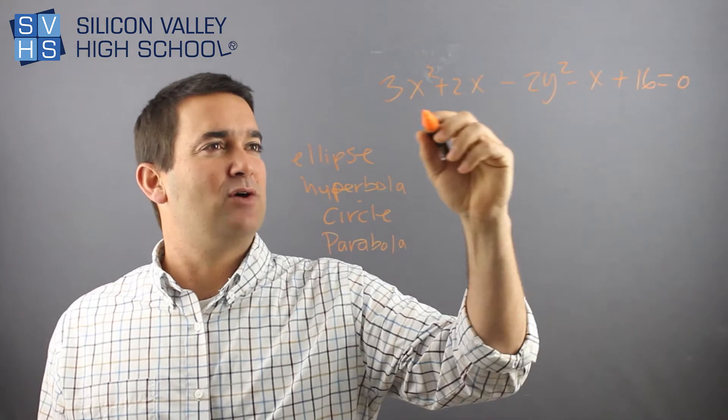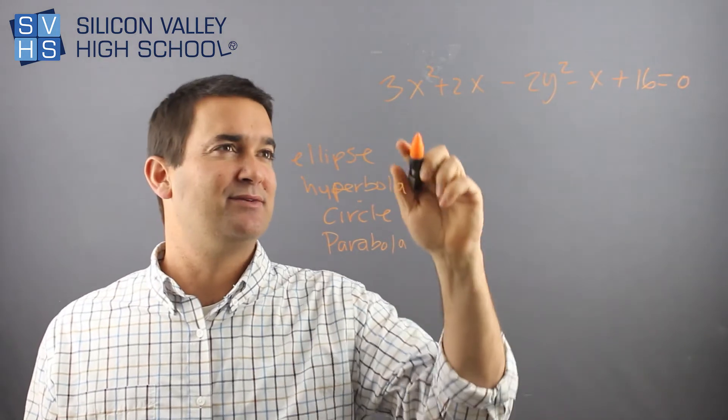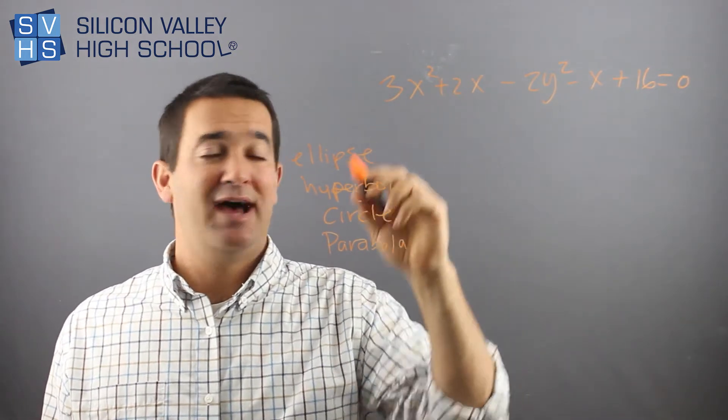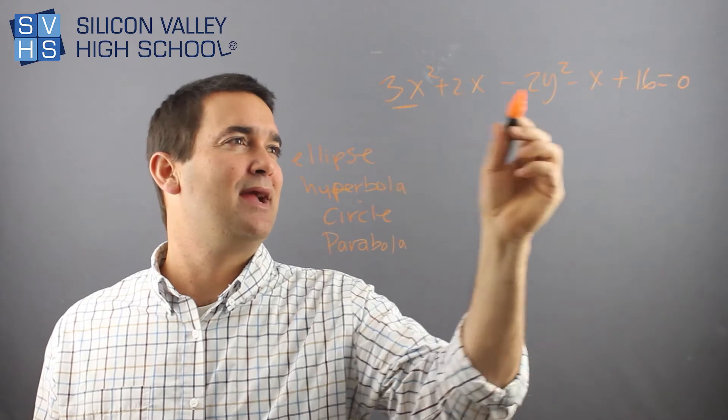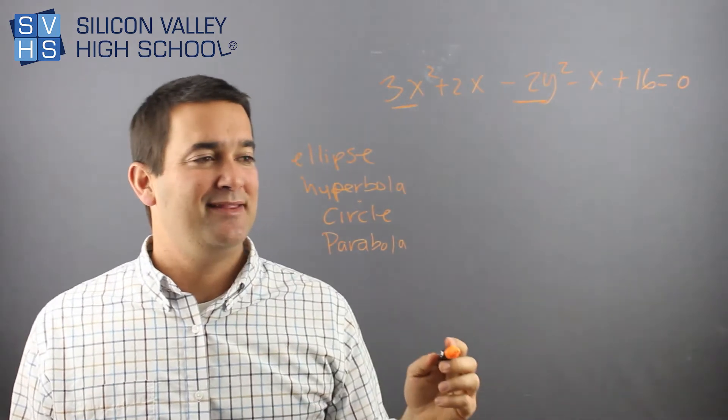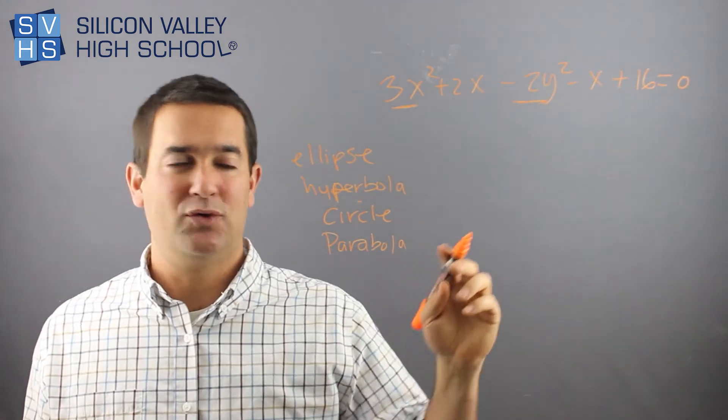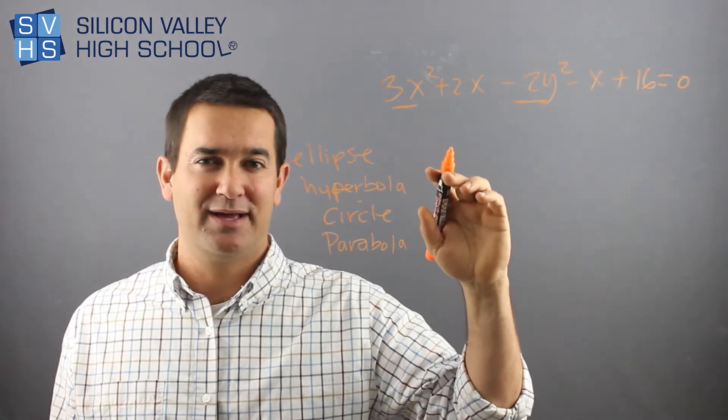And the reason is, all you care about are the two variables with the largest degrees. So for instance, in this case, I care about the x squared, and I care about the y squared. And this is pretty cool. I've never heard this explained this way, but I think it's the best way to look at it.